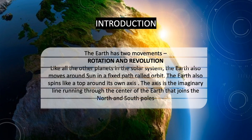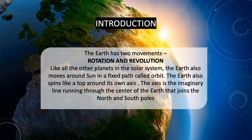Our earth is in constant motion. It has two movements: rotation and revolution. Like all the other planets in the solar system, the earth also moves around the sun in a fixed path called orbit. Just like a spinning top, our earth also spins around its own axis. The axis is the imaginary line running through the center of the earth that joins the North Pole and South Pole.